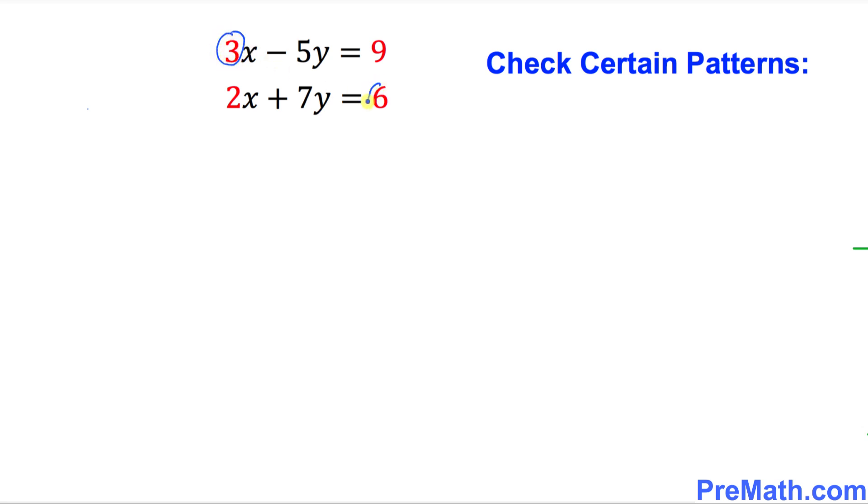3 and 6. If we cross multiply this way, these numbers 3 times 6 is going to give us 18. And if we do the same thing on this side, 9 and 2, if we cross multiply the other way around, we also get 18 as well.